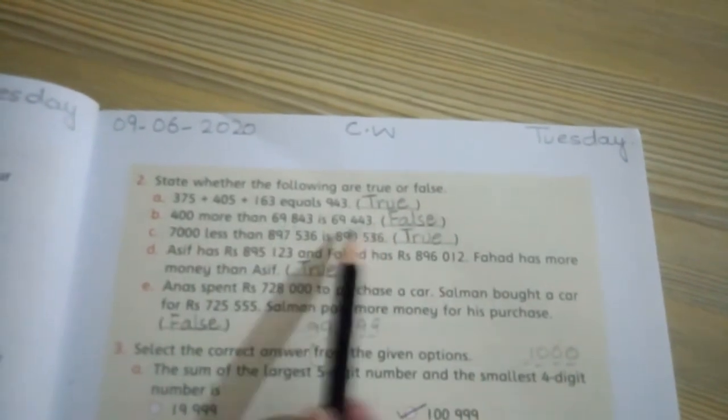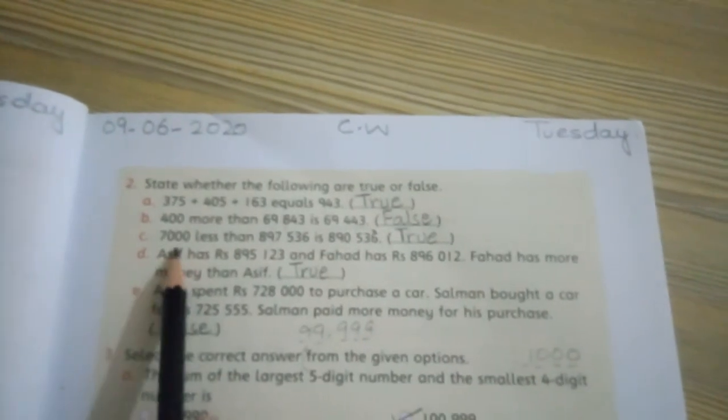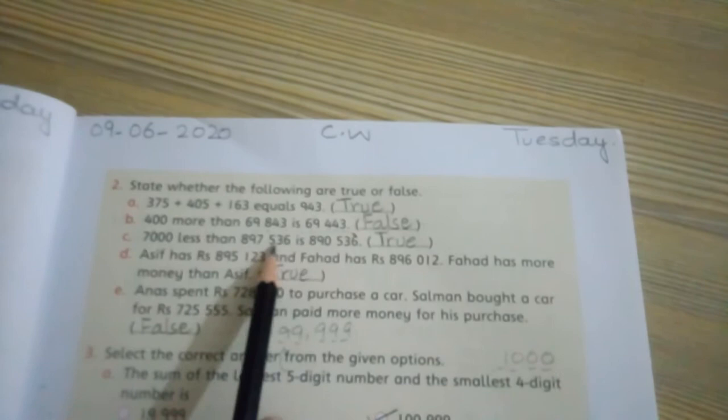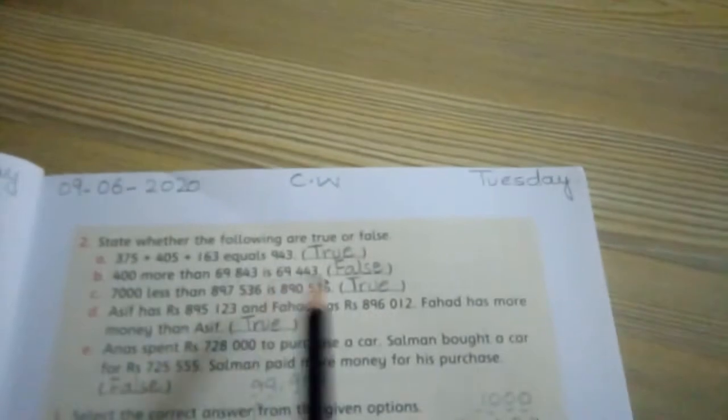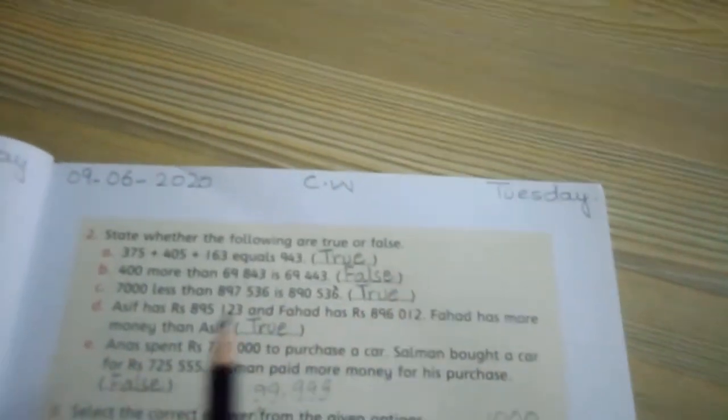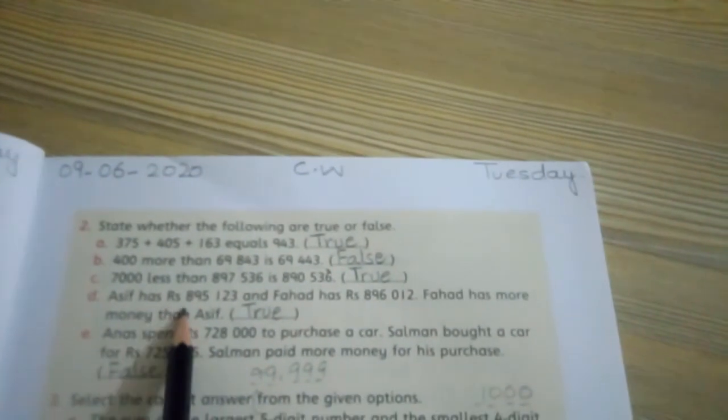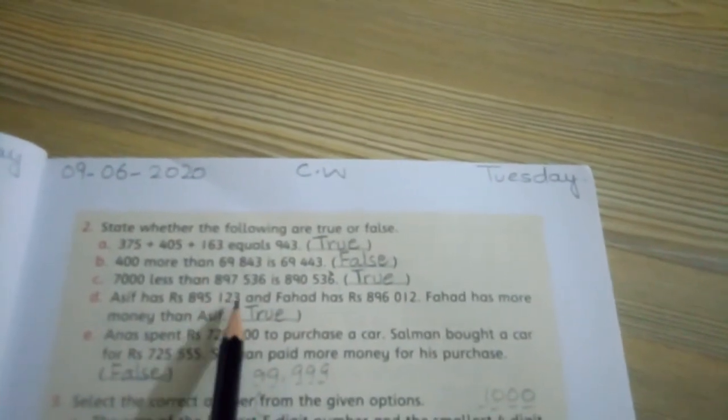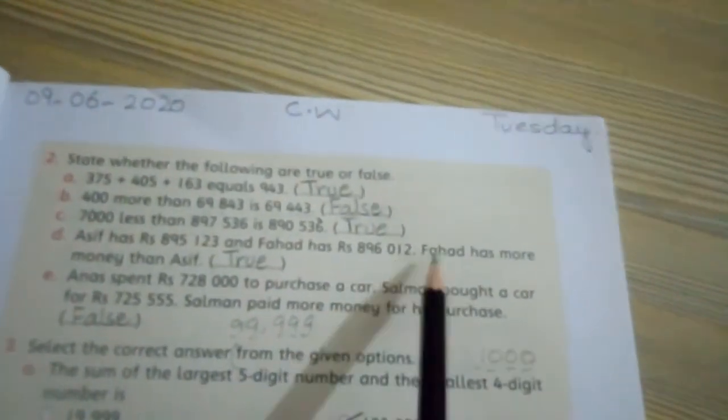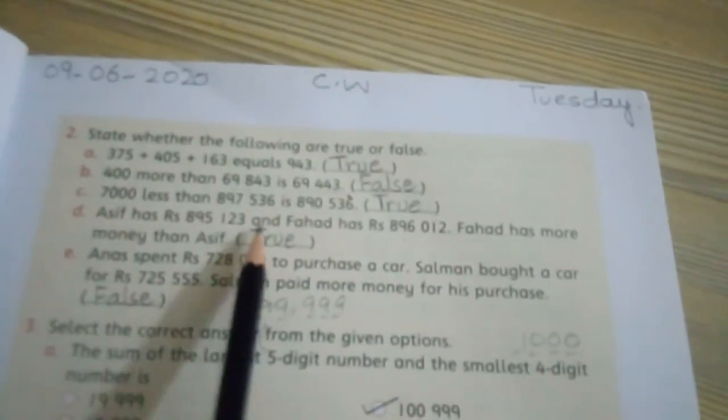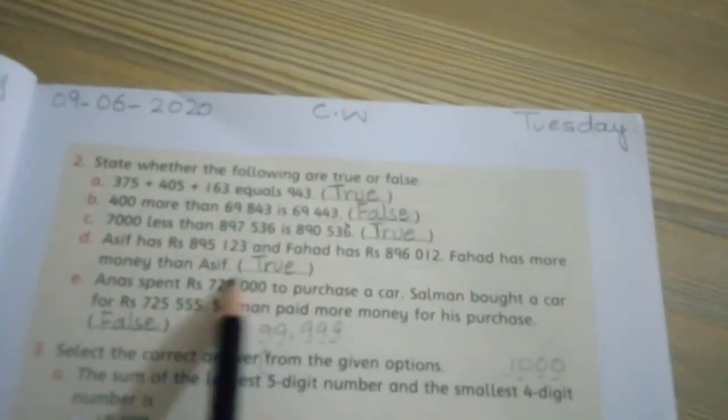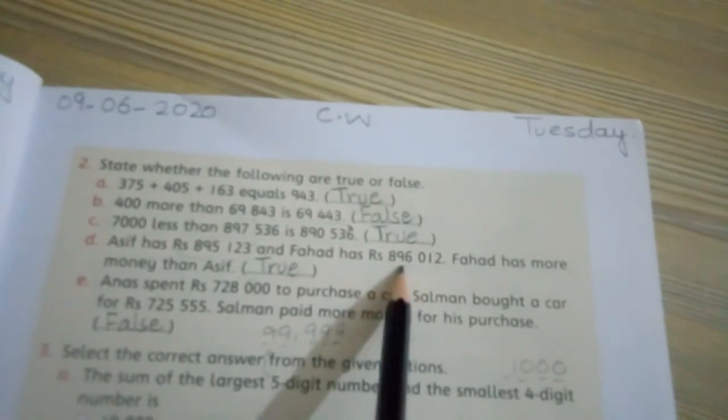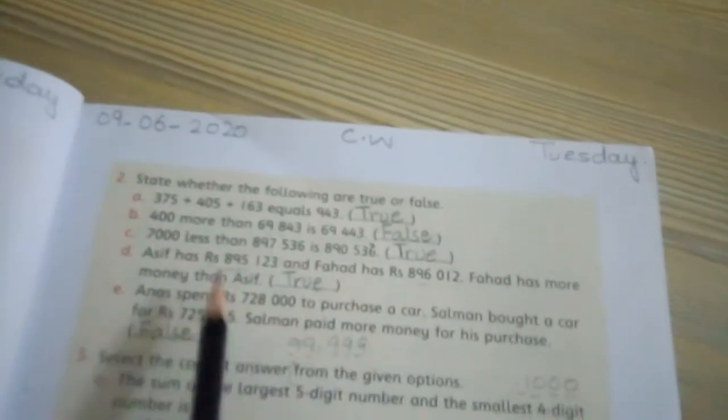Part C: Seven thousand less than eight hundred ninety seven thousand five hundred thirty six. When you subtract seven thousand, you get exactly this answer, so this statement is true. Part D: Asif has rupees eight hundred ninety five thousand one hundred twenty three, and Fahad has rupees eight hundred ninety six thousand and twelve. Fahad has more money than Asif. Since eight hundred ninety six thousand is greater than eight hundred ninety five thousand, this statement is true.